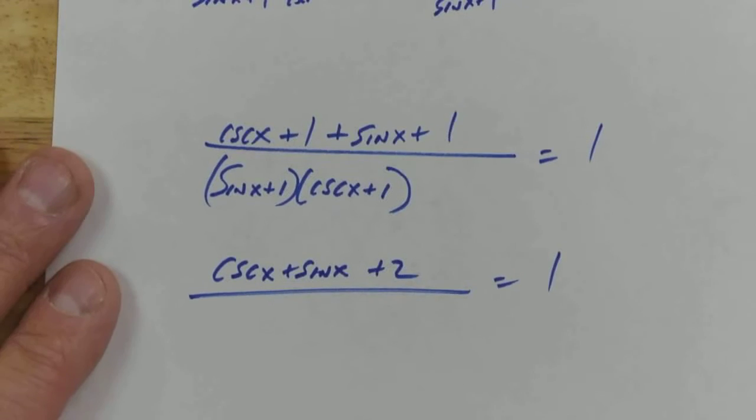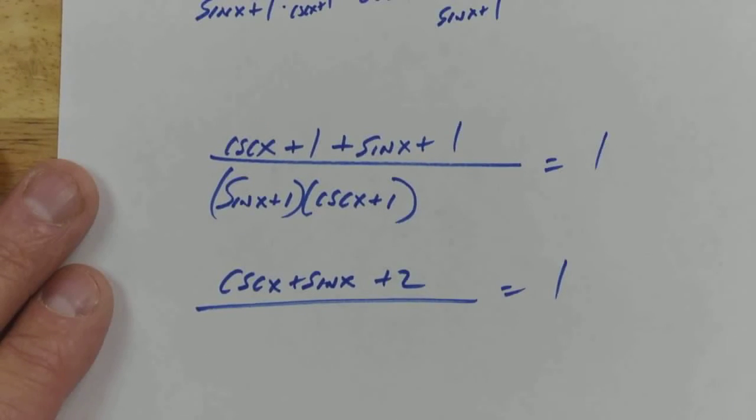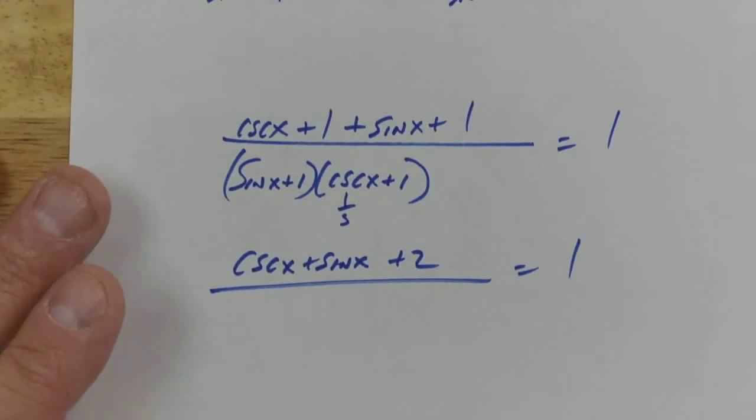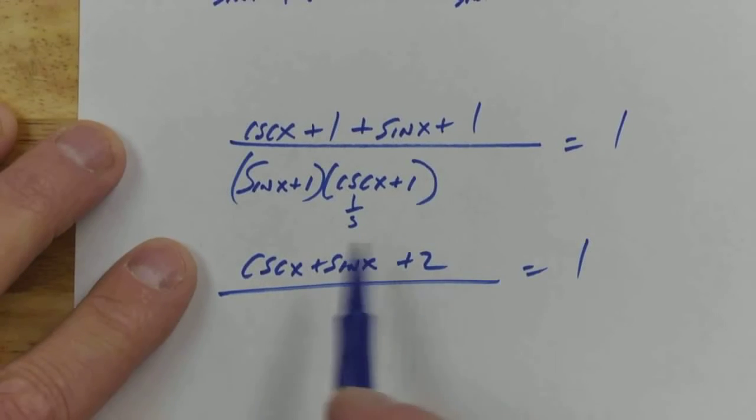So the bottom, let's go ahead and multiply the bottom out. And let's keep in mind that cosecant is 1 over sine. So what I want you to do is when you see it, I want you to go ah. I want you to give me some audible response for when you see it. Let's go ahead and multiply out the bottom.